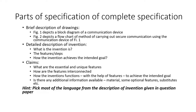Finally, you come to the claims. The claims form the most important part of the complete specification because they define the scope of protection that would be made available to you. You claim what is the unique aspect you are trying to protect. The claims define the essential and unique features, how those features are interconnected, and how they work together to help the invention achieve the intended goal.